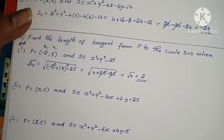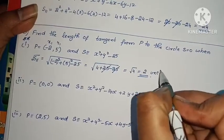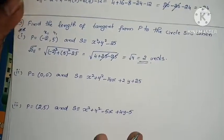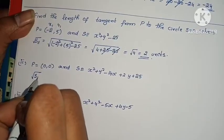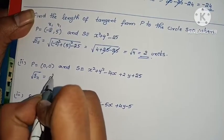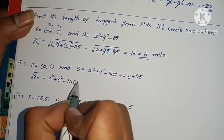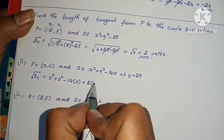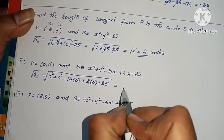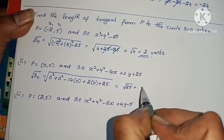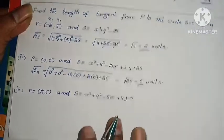Therefore, length of tangent is 2 units. When finding length, always write units. Next: for P equals (0, 0), length of tangent = root of S11 = root of (0 squared plus 0 squared minus 14 into 0 plus 2 into 0 plus 25) = root 25 = 5 units.